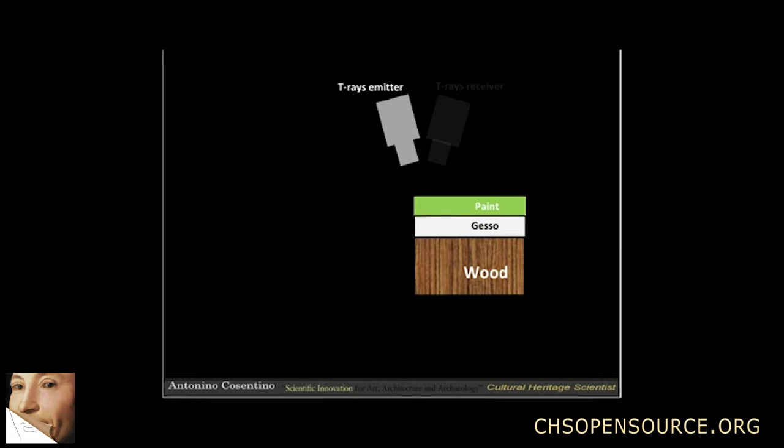The T-Ray emitter sends a T-Ray pulse which reaches the first interface, air-paint, let's say after one picosecond. The pulse is then bounced off and reaches the T-Ray receiver after another one picosecond.